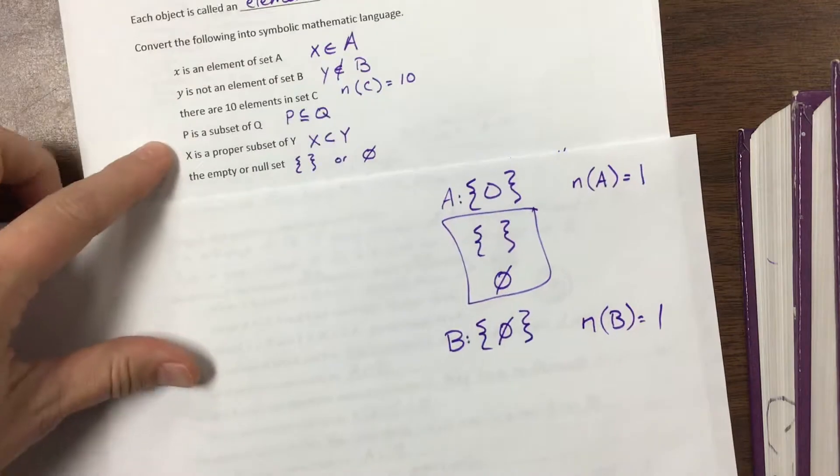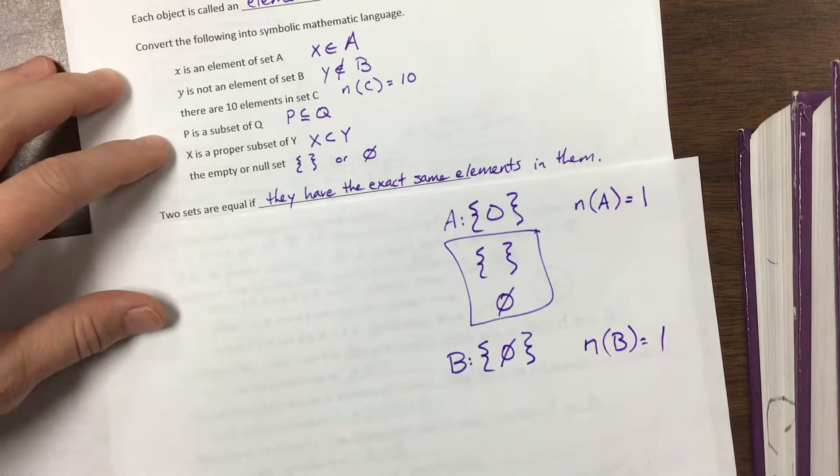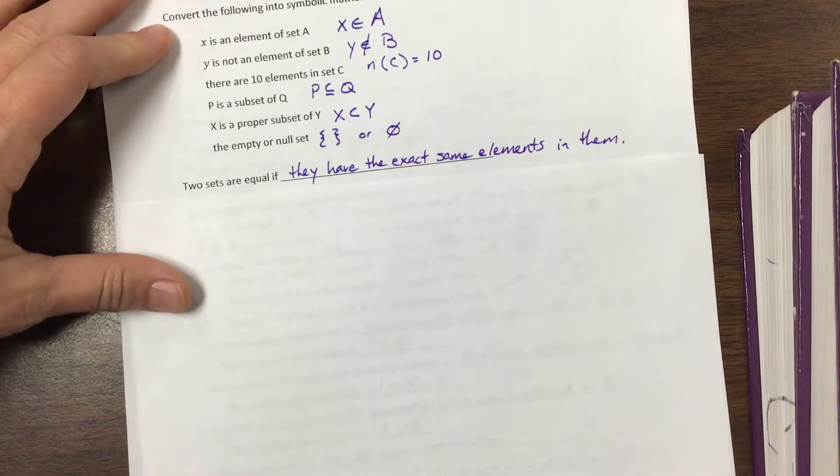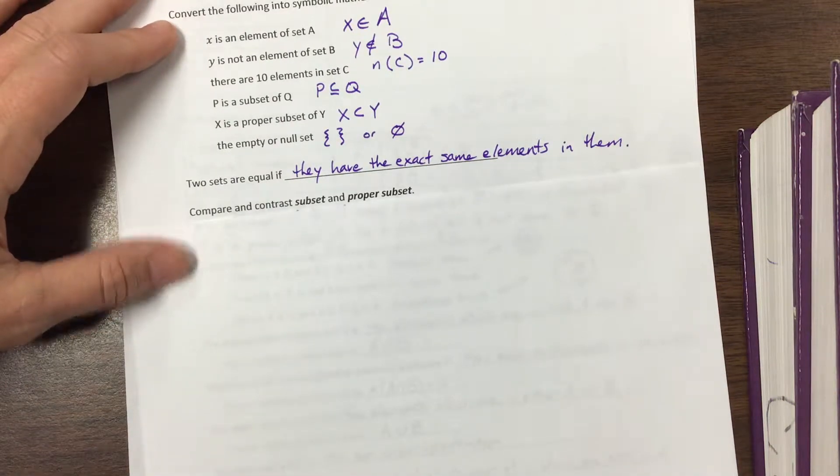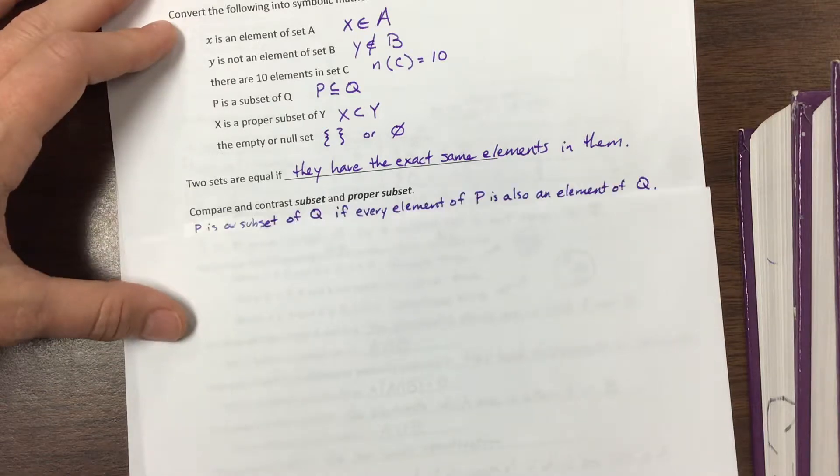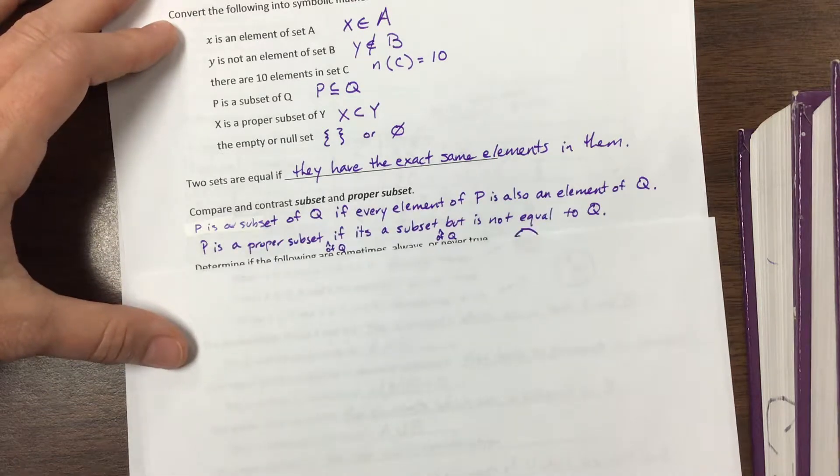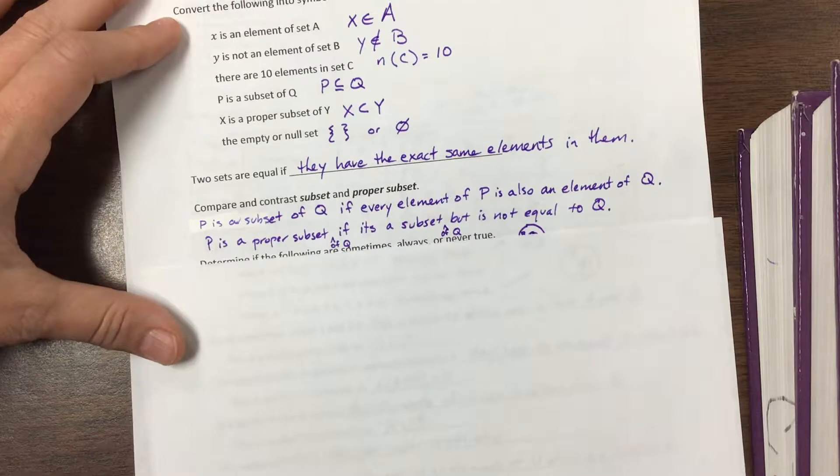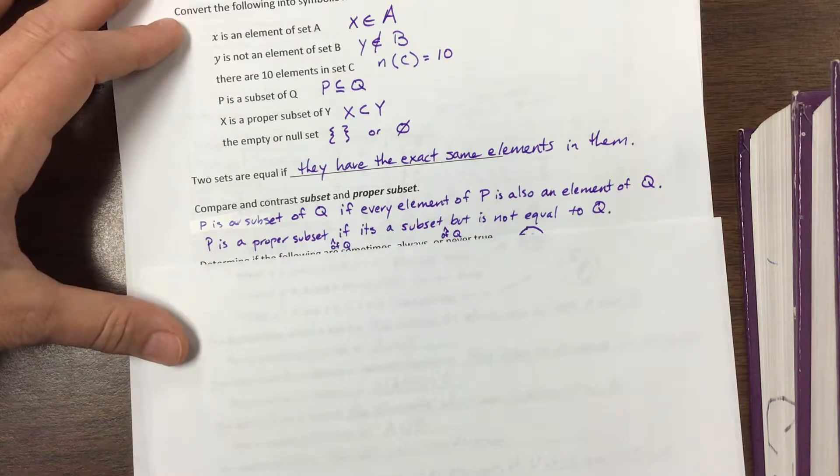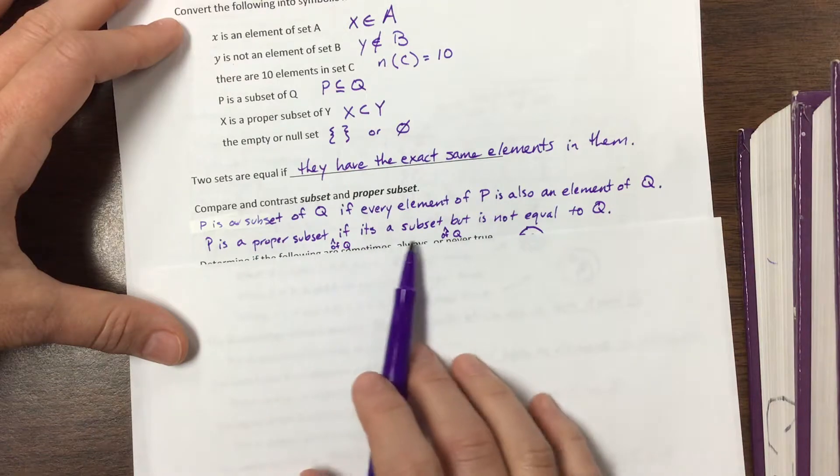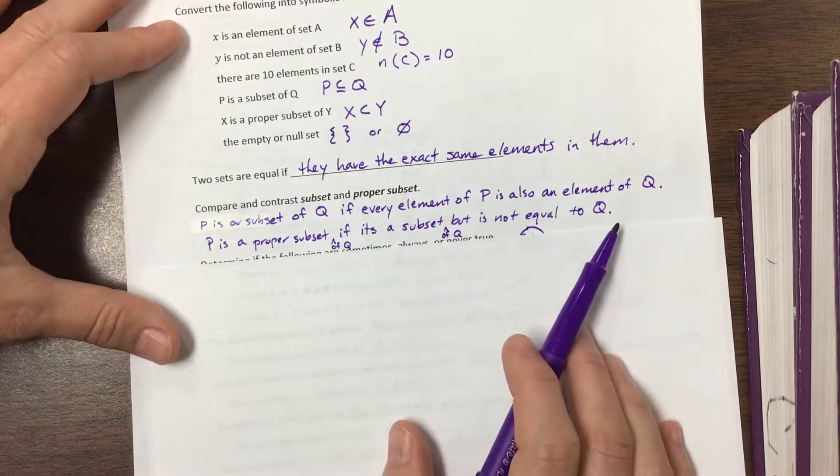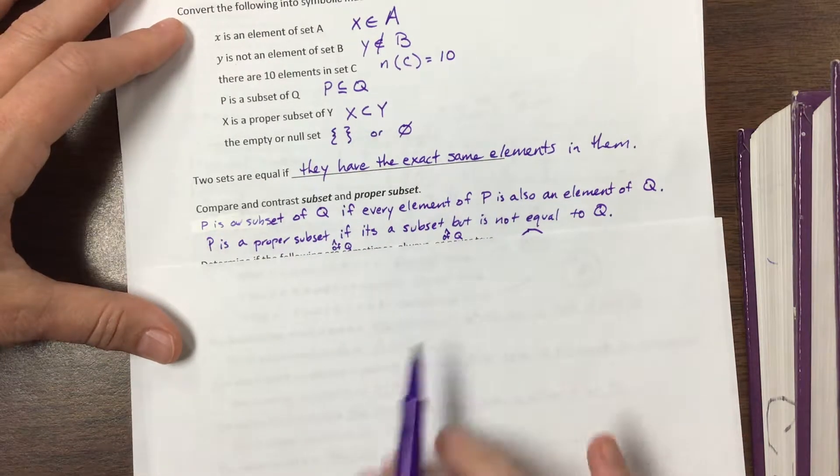So here's that. Then the next thing it says, two sets are equal if they have the exact same elements in them. So we talked a little bit about compare and contrast subset and proper subset. I wrote P is a subset of Q if every element of P is also an element of Q. P is a proper subset of Q if it is a subset of Q but not equal. The proper tells us that they're not the same.